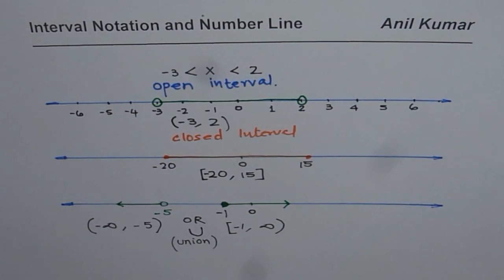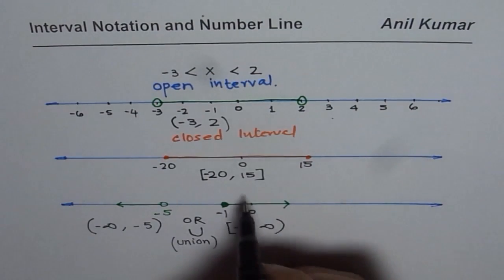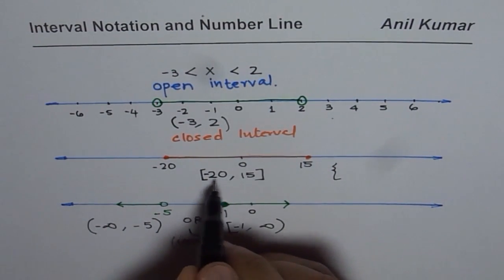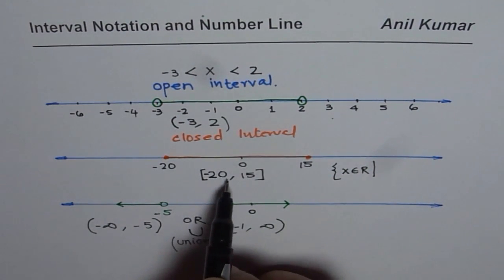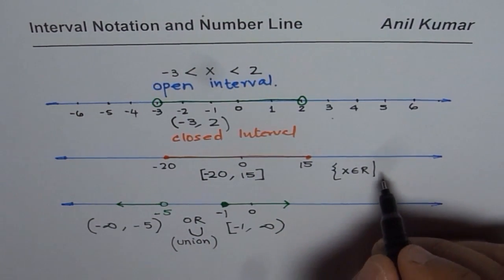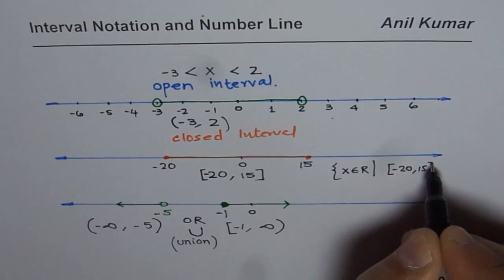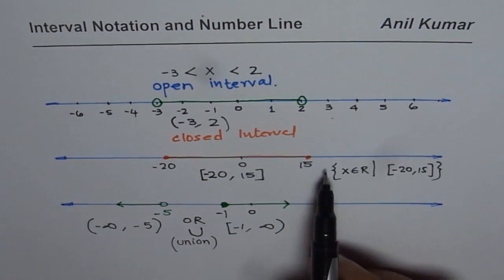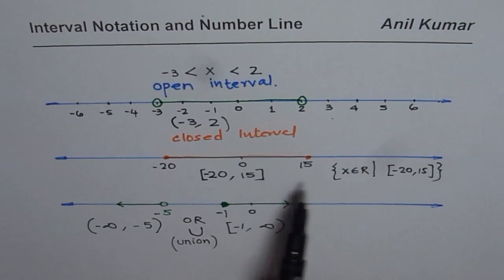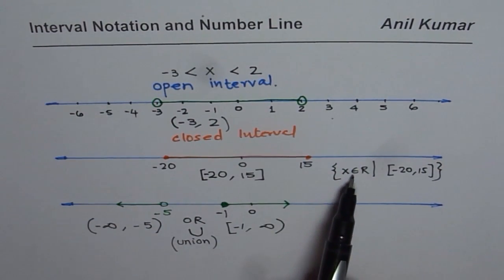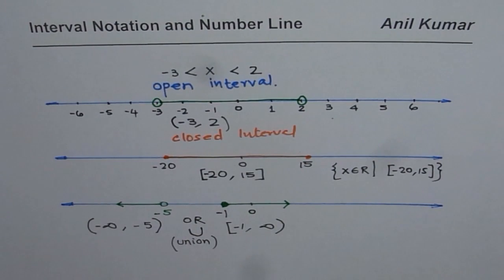Sometimes in set notation you could also write this interval by saying x belongs to real numbers such that x is between minus 20 and 15, both included. You could write this within curly brackets to represent the set. But if you write the interval notation alone, it already means that. There is no need to say x belongs to real numbers — it is assumed. So that is also important to understand.